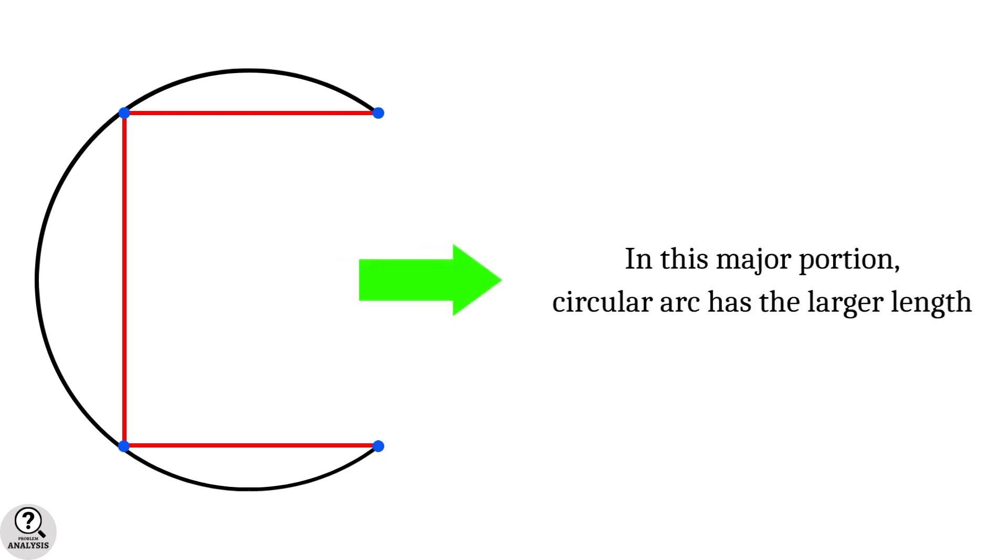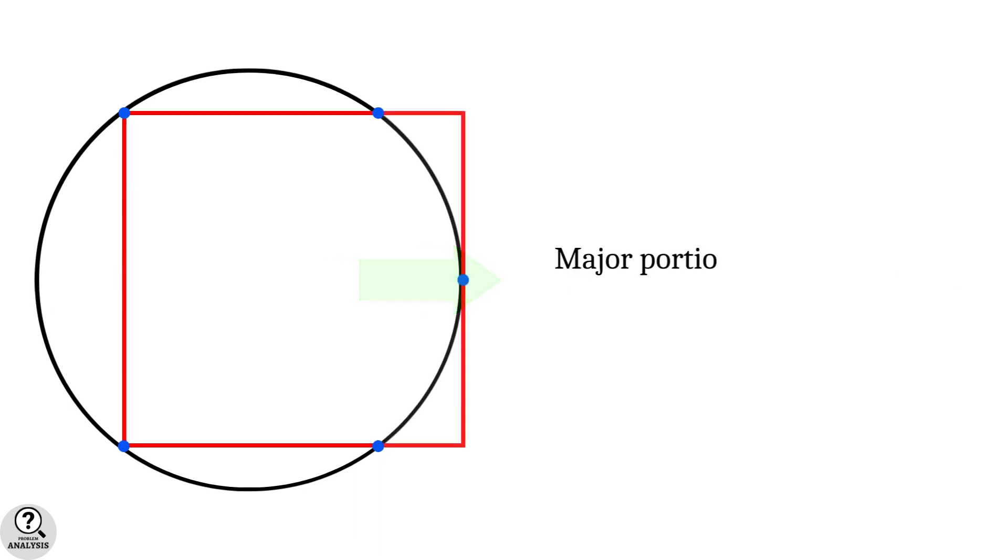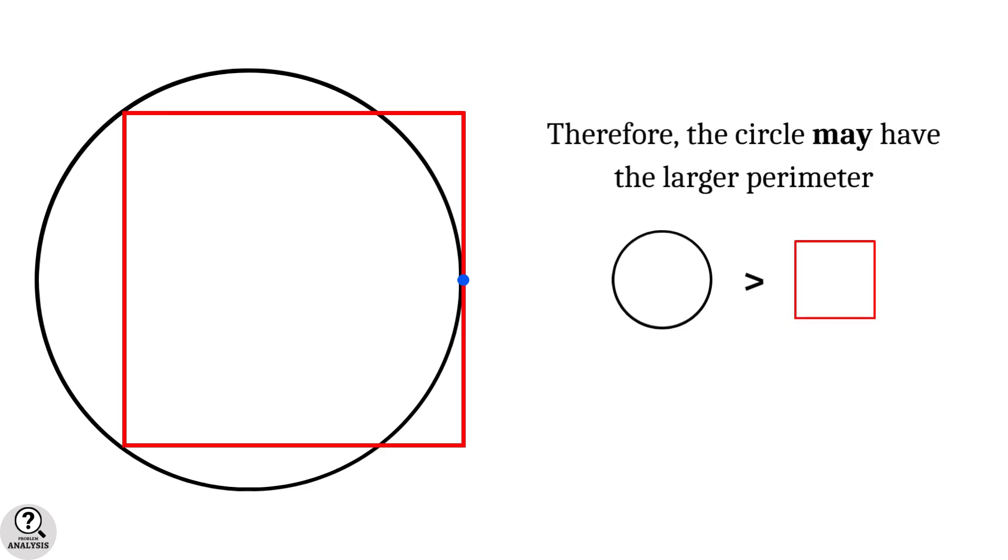Which means in this major portion, the circular arc has the larger length. And since the major portion contains the large majority of the perimeters of both the circle and square, we can intuitively say that the circle may have the larger perimeter. But still, it's an intuitive possibility only.